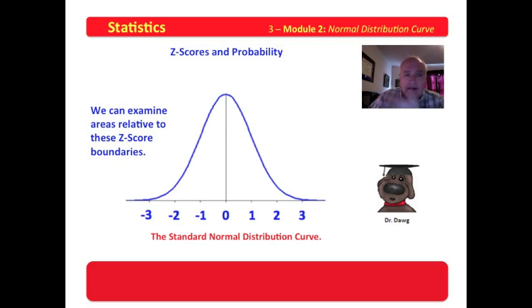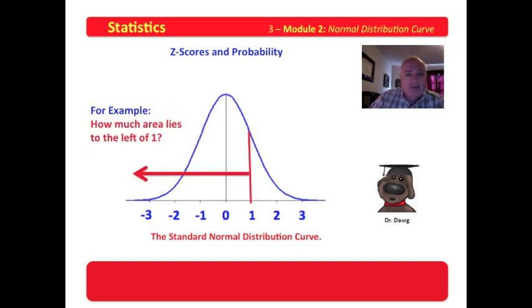We can examine areas relative to these z-score boundaries. Now here's a new word: a boundary. In other words, we can set a place that we want to make solid and then look at areas coming up to it or going away from it.